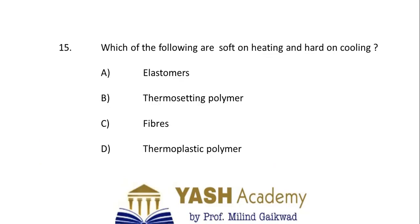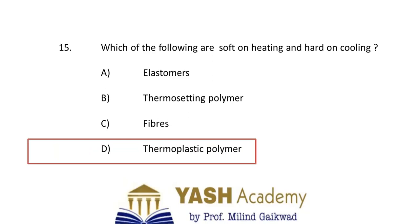The last question: which of the following are soft on heating and hard on cooling? A. Elastomers, B. Thermosetting polymers, C. Fibers, or D. Thermoplastic polymers. The correct answer is D — thermoplastic polymers, because they are reusable, becoming soft on heating and hard on cooling. This is the characteristic property of thermoplastic polymers.